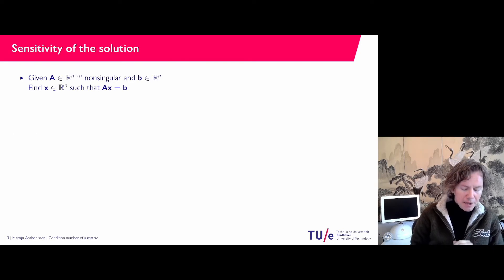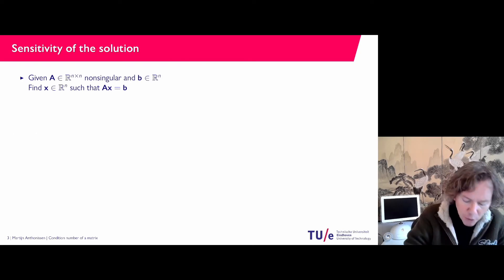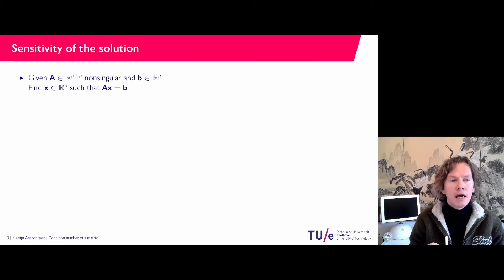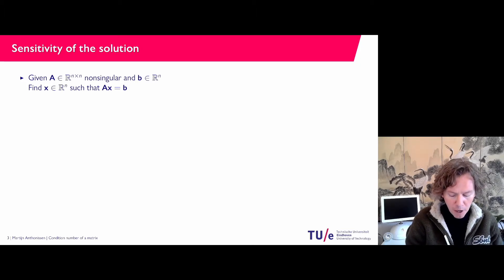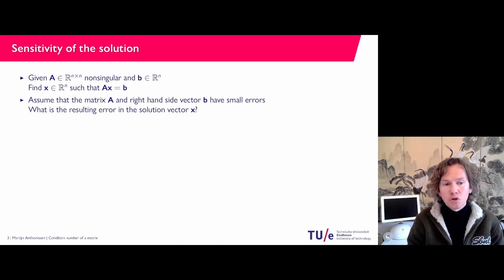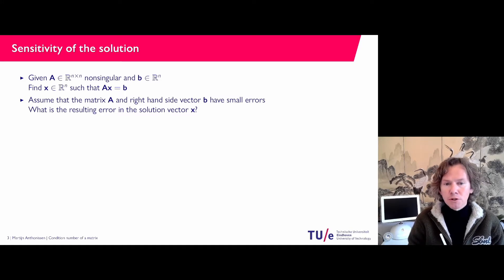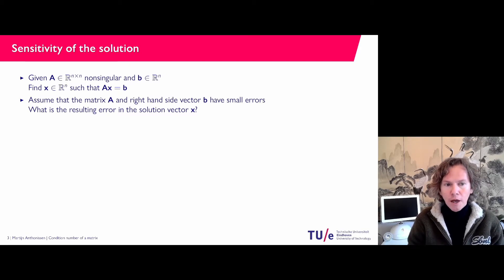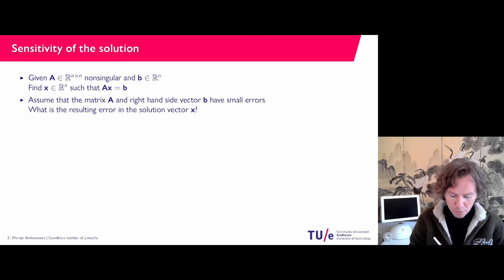The idea is this: we're trying to solve a linear system Ax equals B. A and B are given. Now I'm going to assume that A and B both have small errors, and we are interested in the sensitivity. So A and B are perturbed — how does that influence the solution vector x?